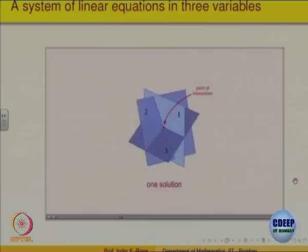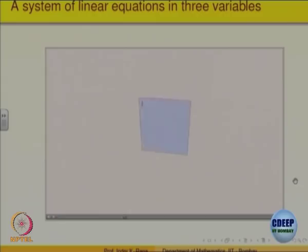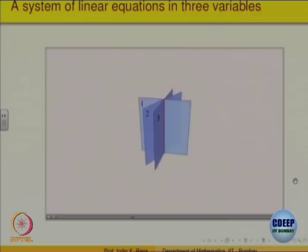A second possibility is that two of the planes are not parallel, and so their points of intersection form a line. If the third plane intersects the other two along this same line, then the common points of intersection for all three planes are represented by that line. The system will therefore have an infinite number of solutions corresponding to every point on the line.